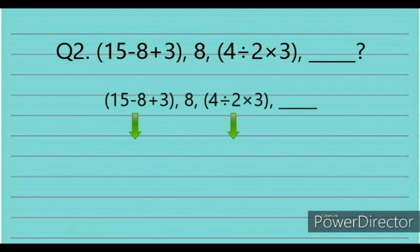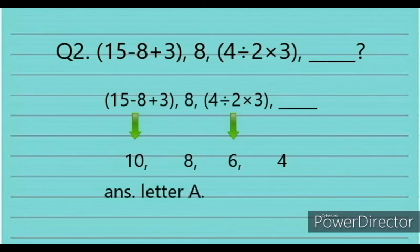You have to solve the equations first. 15 minus 8 plus 3 equals 10, and 4 divided by 2 times 3 equals 6. The sequence is subtracted by 2, giving: 10, 8, 6, and 4. The answer is letter A.